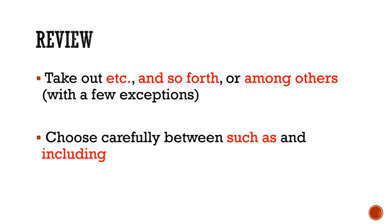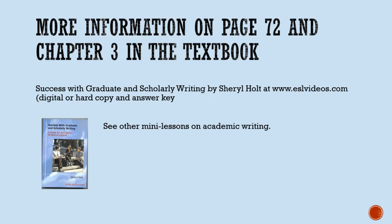So here are the guidelines: take out 'etc.,' 'and so forth,' or 'among others' most of the time. Don't make these phrases a habit in your writing, and choose carefully between 'such as' and 'including.' 'Including' may better represent what you're trying to tell the reader. For more information on formal writing conventions, see chapter 3 and particularly page 72.